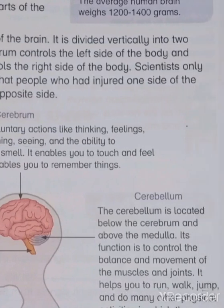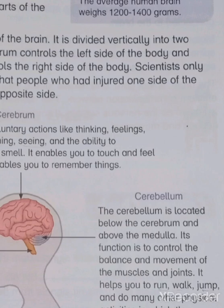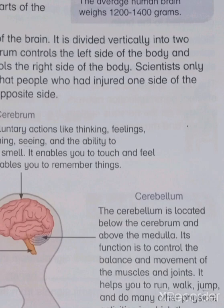The next part is the cerebellum. The cerebellum is located below the cerebrum and above the medulla. Its function is to control the balance and movements of the muscles and joints. It helps you to run, walk, jump, and do many other physical activities in which the muscles are involved.